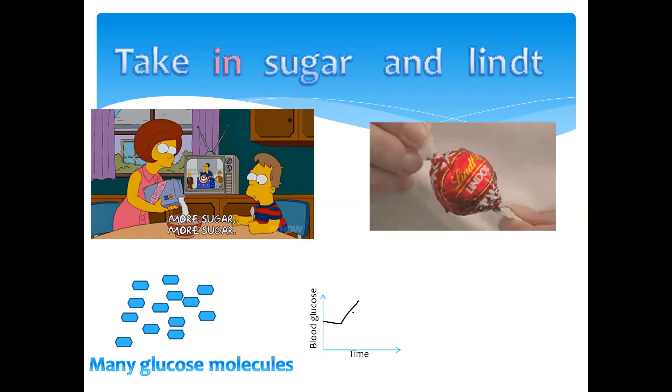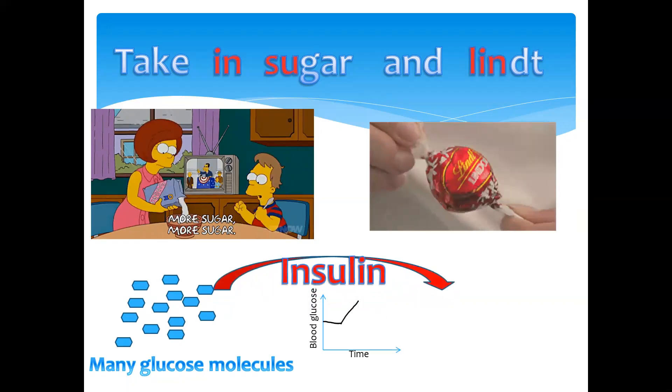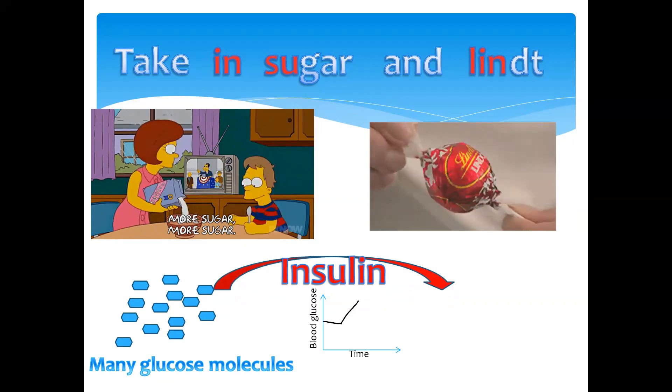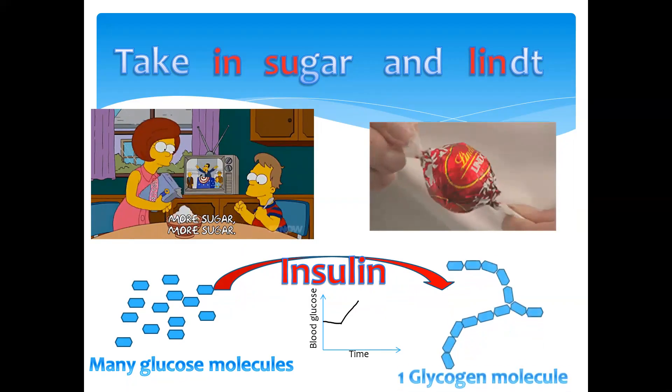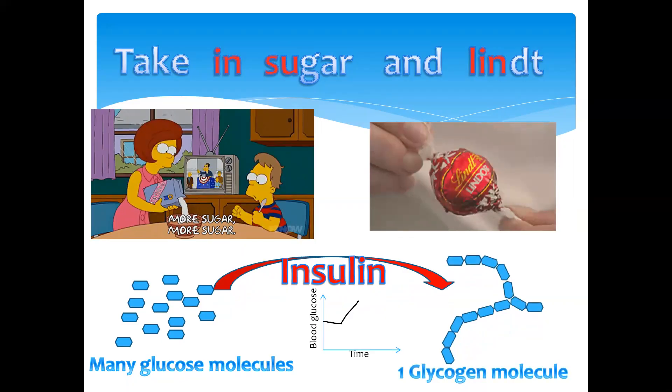What will happen is you took in sugar and glucose, so insulin would be made. Insulin, which is released from the pancreas, will then convert the excess glucose molecules into a stored form of glucose which is known as glycogen.